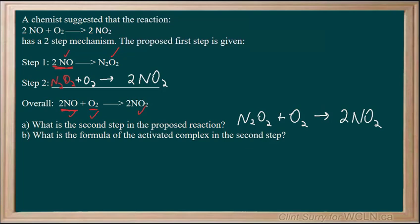In part B, we're asked what would be the activated complex in step number two. What we basically do at this point is we combine whatever was a reactant in the step just to get all together. That becomes the intermediate piece that is made on the way to making the product for that step.